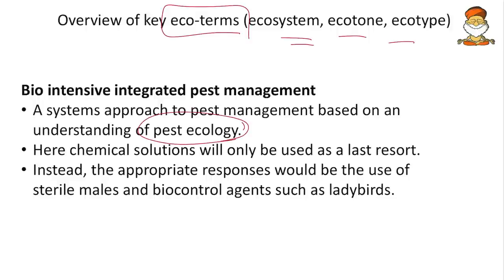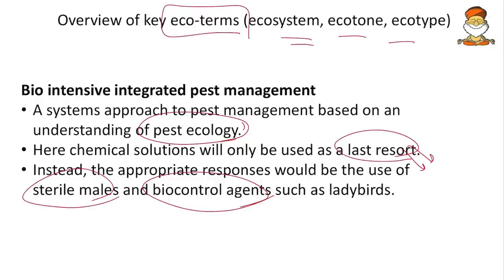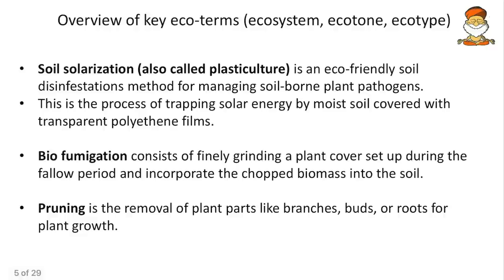On the basis of pest ecology, we manage pests. Chemical solutions will only be used as a last resort — least chemicals used, only in exceptional cases. Instead, appropriate responses include the use of sterile males and bio-control agents. If we introduce sterile males, the population of a species will drastically reduce.